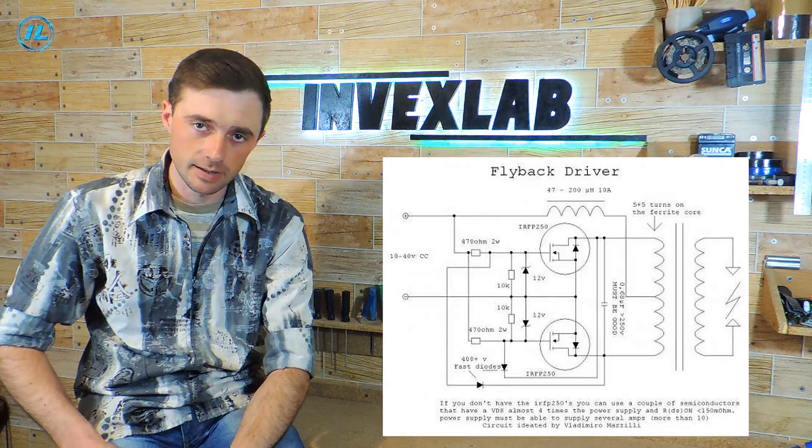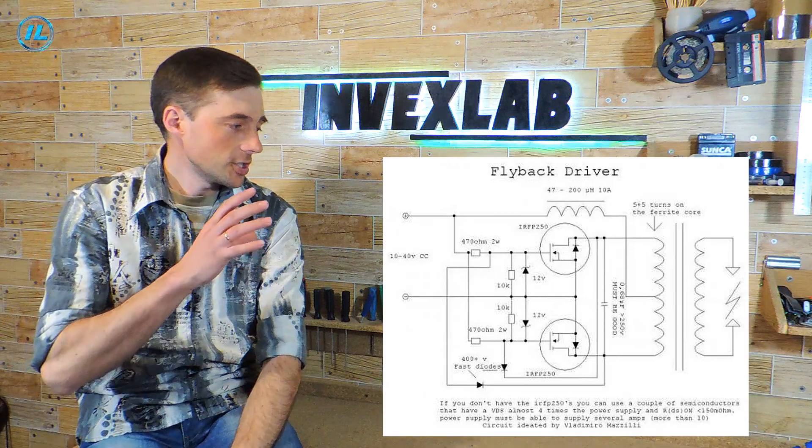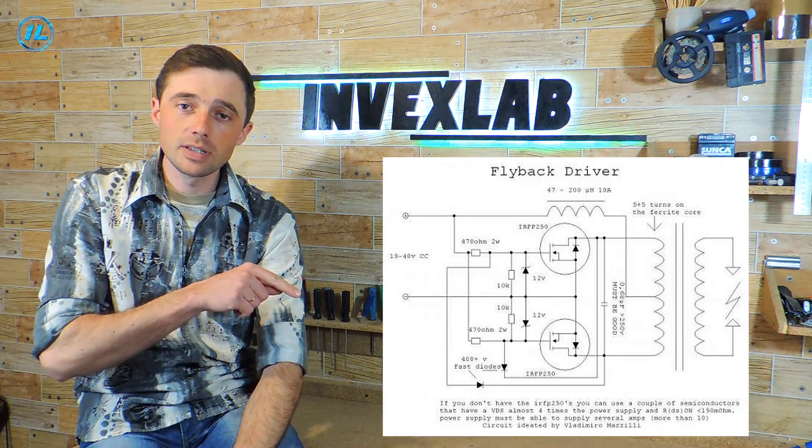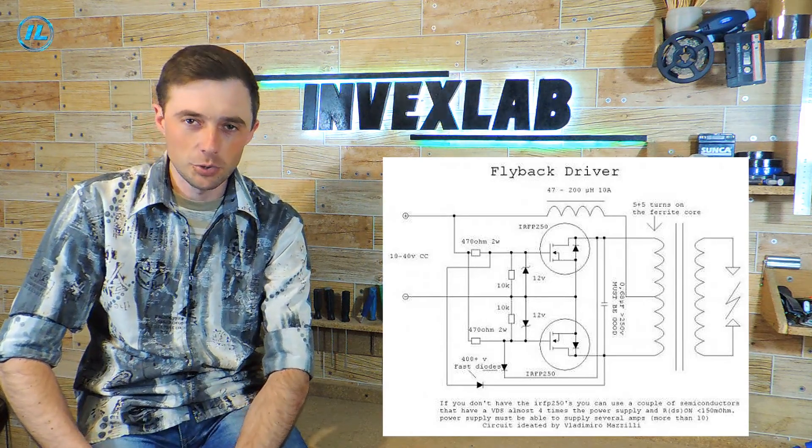What is this circuit of a high voltage generator? In fact, it is a two-stroke auto generator converter. A distinctive feature of this scheme is its simplicity, but at the same time a large output power.